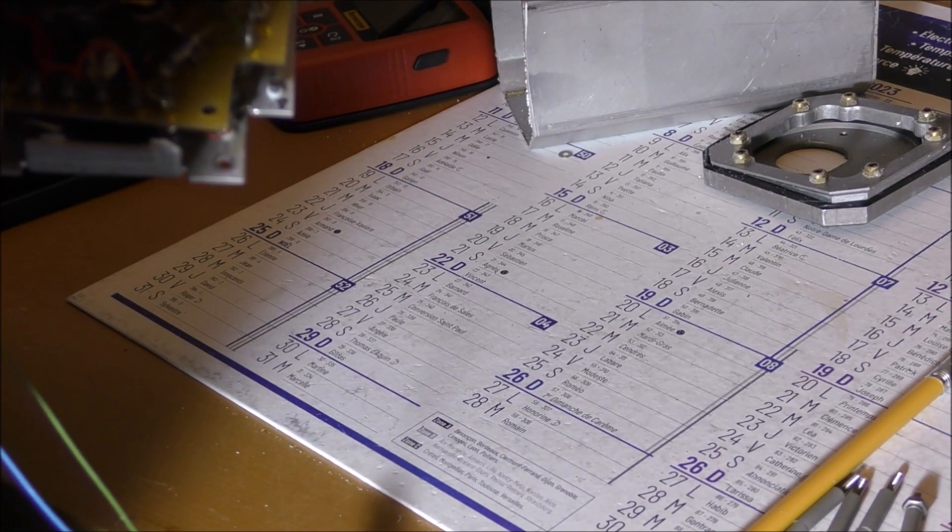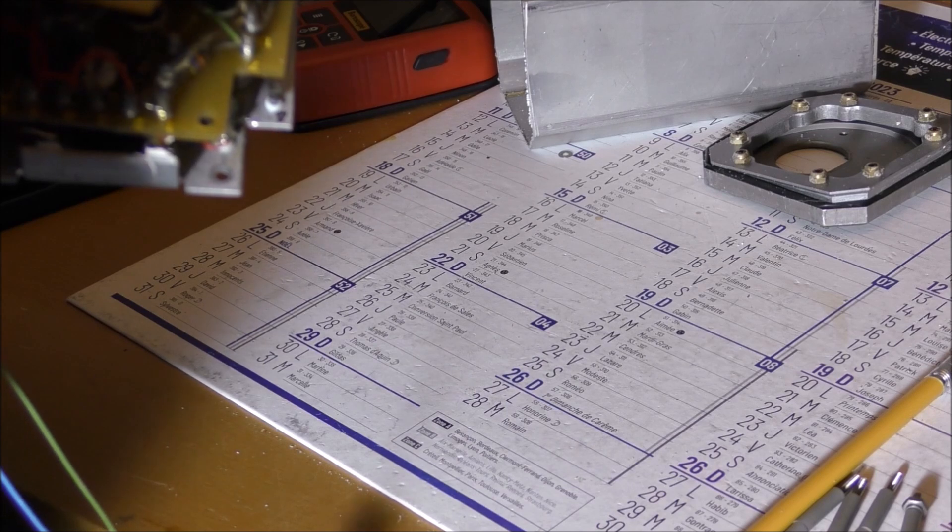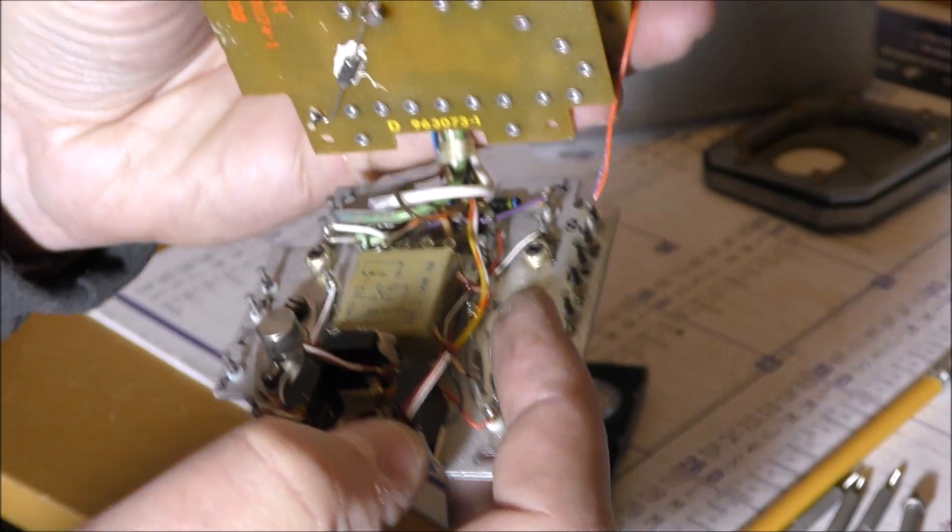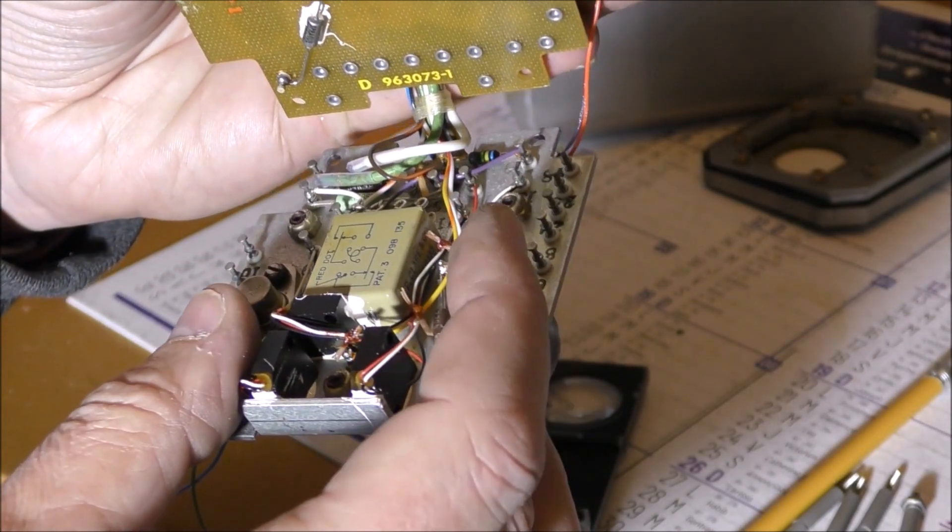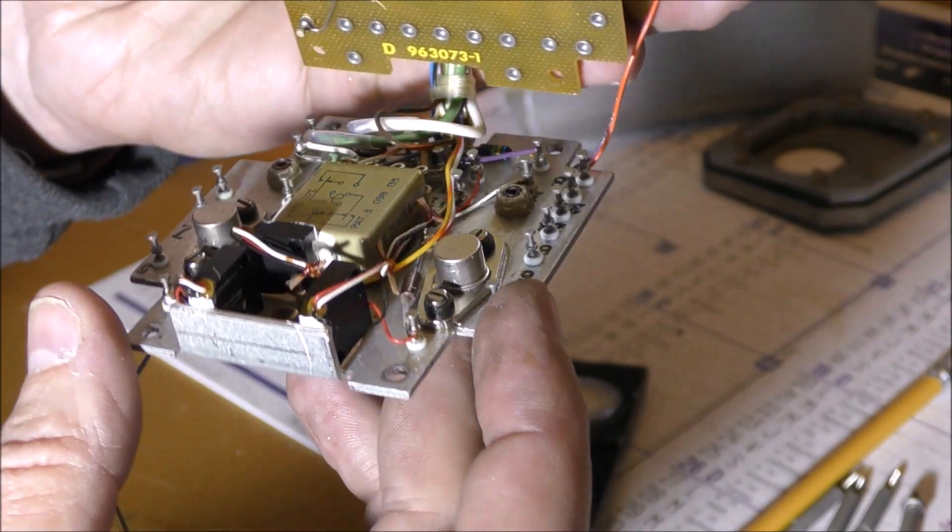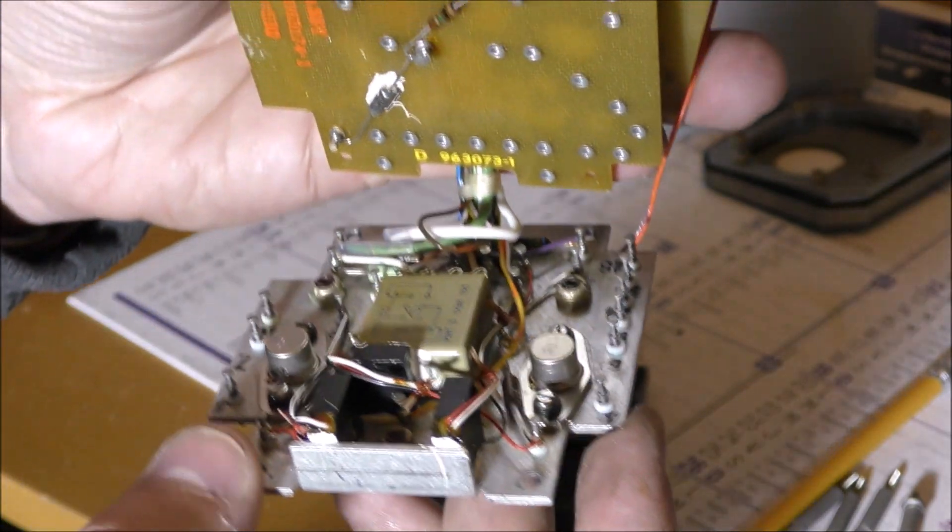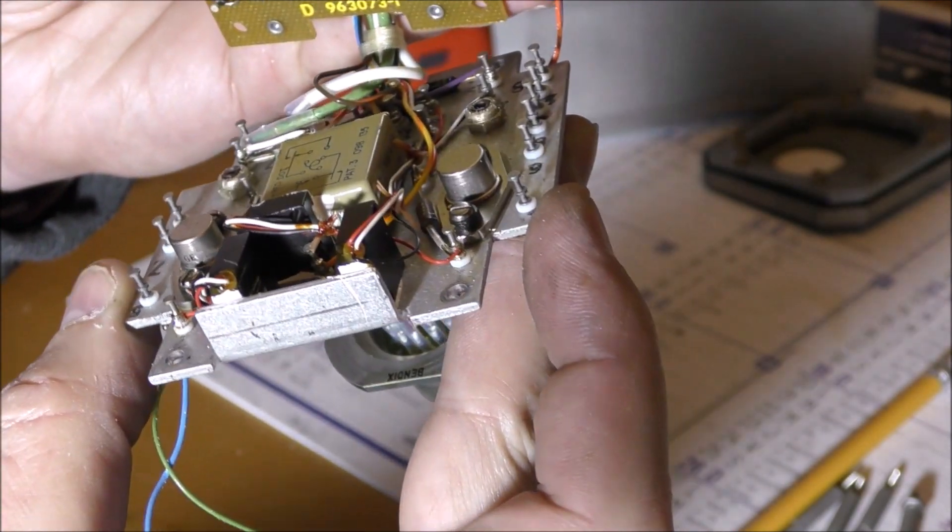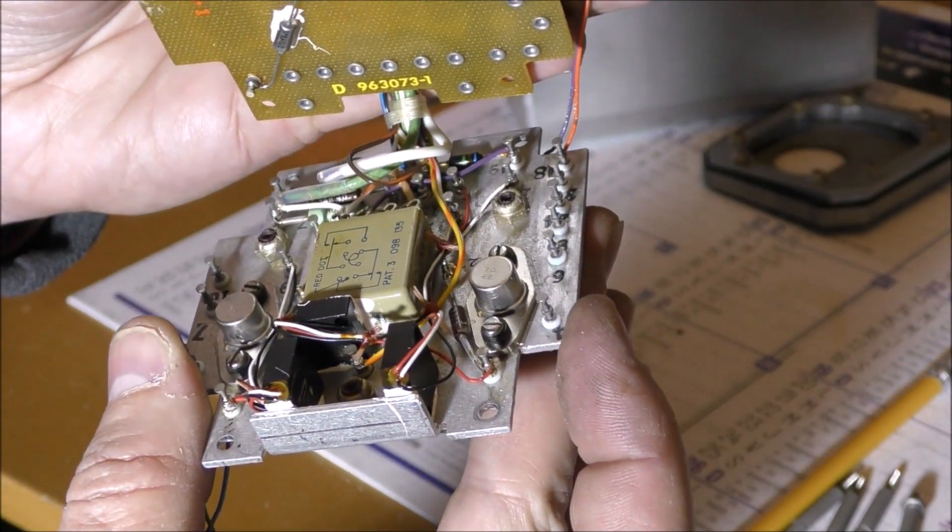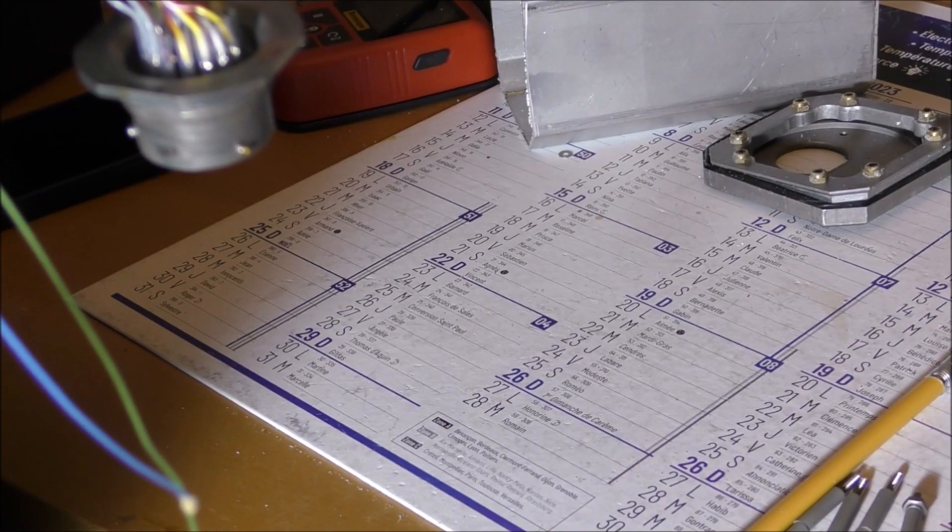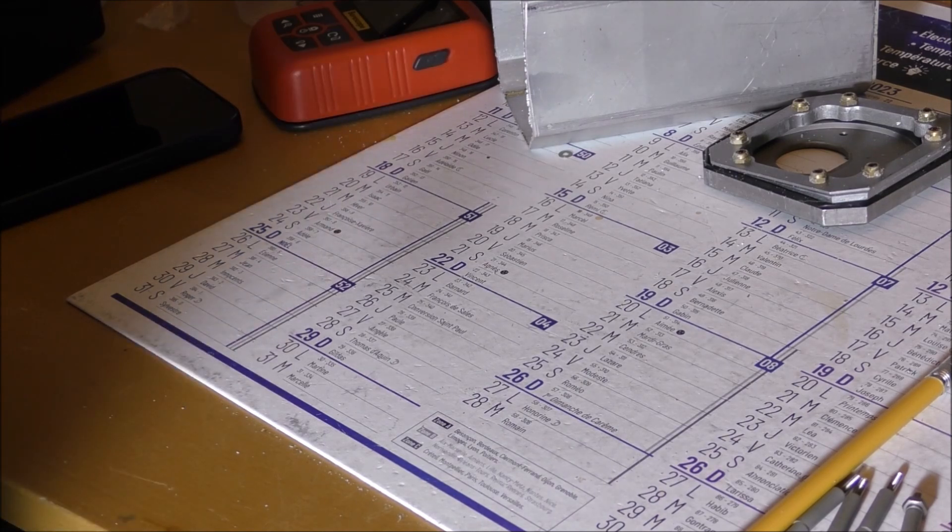Let's see the part number. There is a 2N336. And here there are two transistors, one relay, and a few passive parts. You can see the trimmers here. The transistors are maybe used for the power supply. There is a 2N2197, the second one is the same.